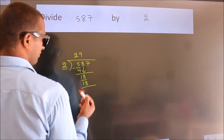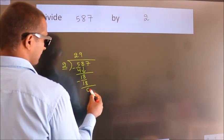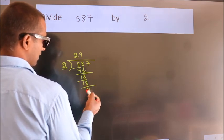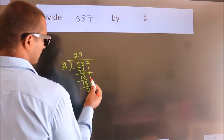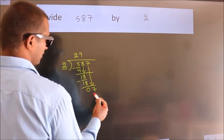Now, we subtract. We get 0. After this, bring down the beside number. 7 down. So, 7.